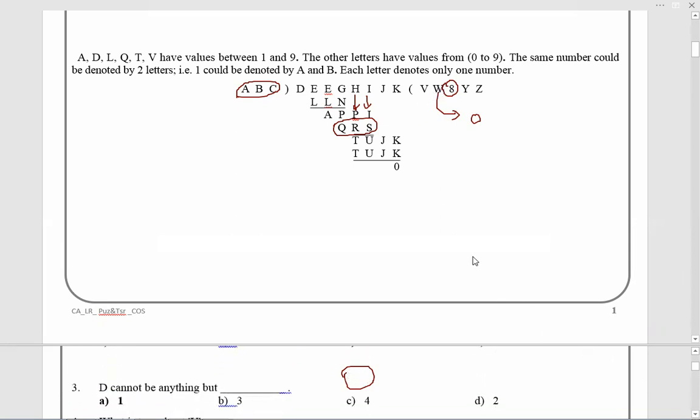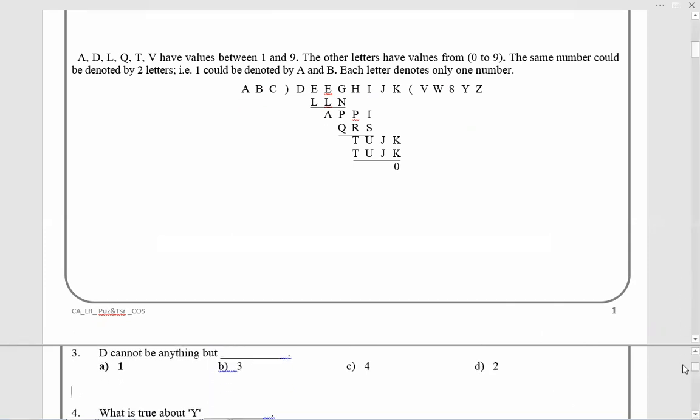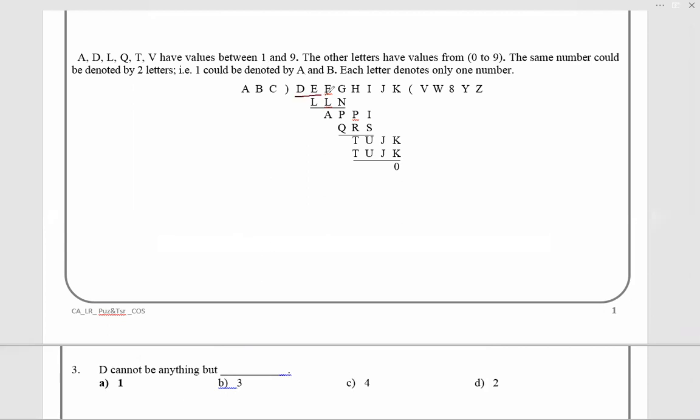D cannot be anything but... this is a four-digit number, this is a three-digit number. Difference is a two-digit number. So DEG is one thousand something. So D cannot be anything but one. A four-digit number subtract three-digit number gives you two-digit number, means four-digit number had to be one thousand something.